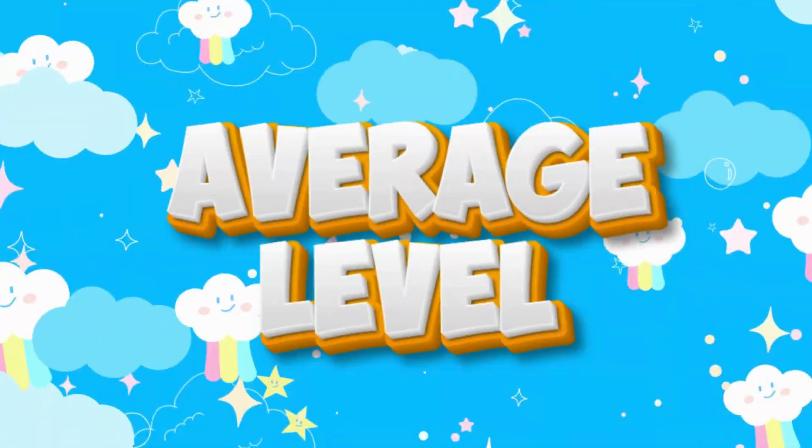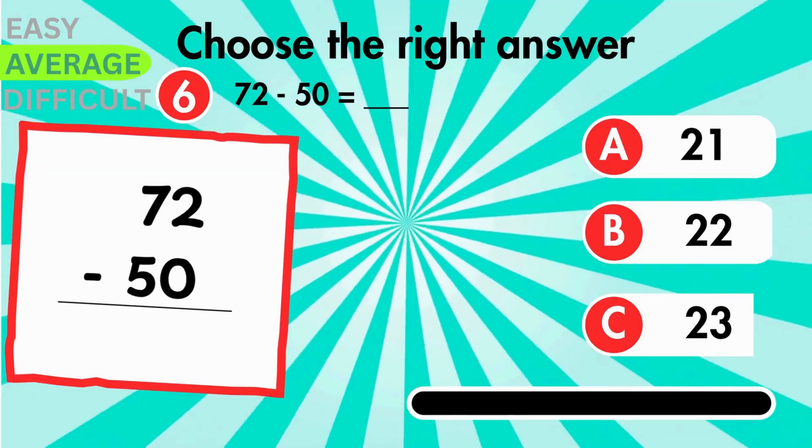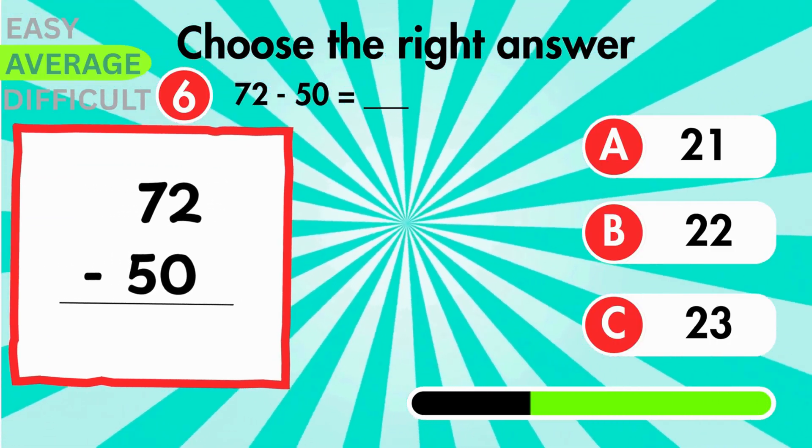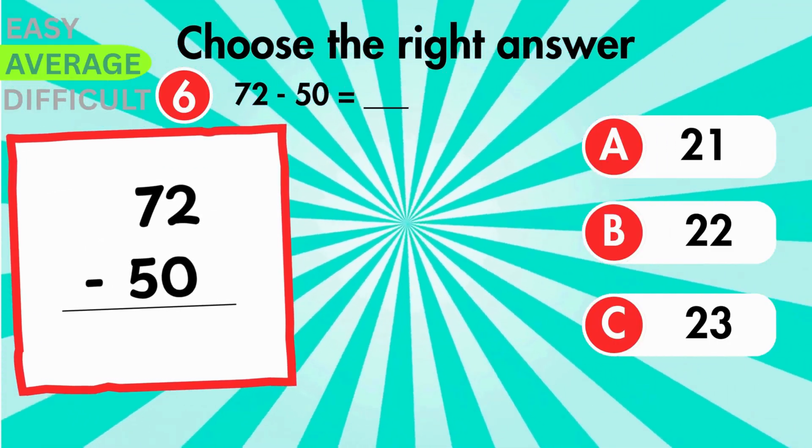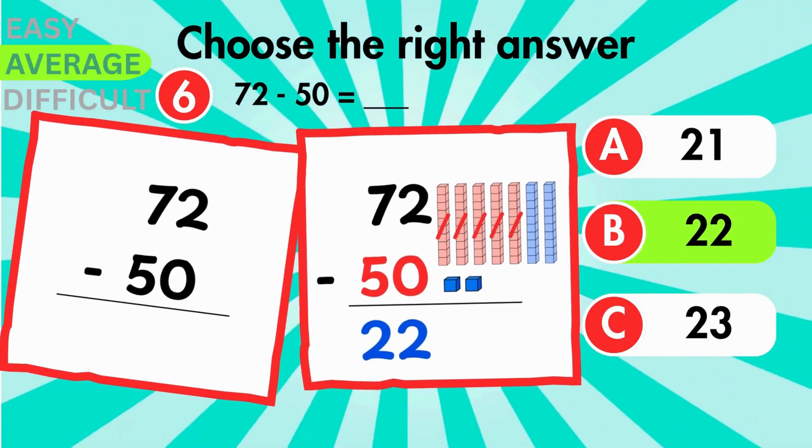Let's now jump to the average level. Find the difference between 72 and 50. The difference is 22.